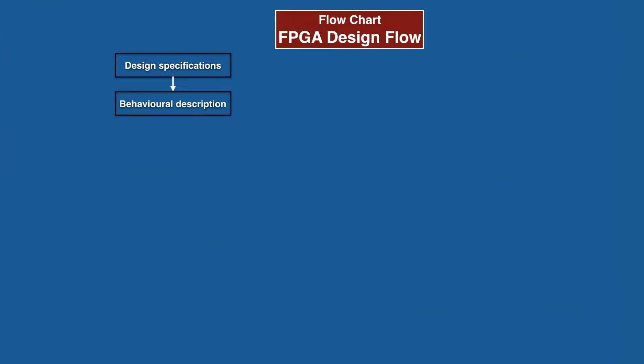The second stage in the flow chart of FPGA design flow is behavioral description of a design. In the behavioral description stage, data flow architecture is described for the design to satisfy the behavior of the digital system described in the form of a truth table or boolean expression.